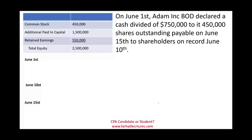On June 1st, Atom Company Board of Directors declared a cash dividend of $750,000 to its $450,000 shareholders, payable on June 15th to shareholders on record June 10th. The board of directors decided to make a dividend payment of $750,000. Let's take a look at the equity section of Atom Company — they only have $550,000 in retained earnings. It means they want to distribute $750,000 in cash dividend, but they only have $550,000 in retained earnings.